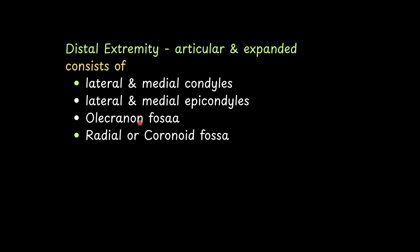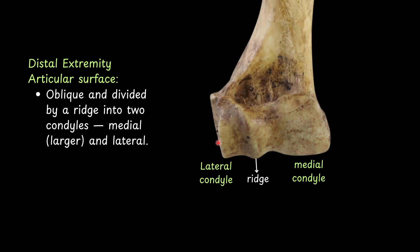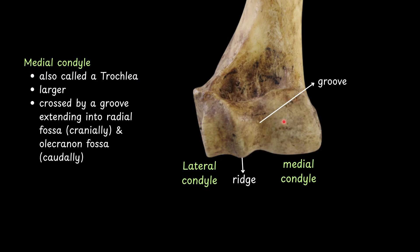The distal extremity is articular and expanded. It consists of lateral and medial condyles, lateral and medial epicondyles, olecranon fossa, and radial or coronoid fossa. The articular surface is oblique and divided by a ridge into two condyles — medial and lateral. The medial condyle, also called the trochlea, is larger. It is crossed by a groove extending into the radial fossa cranially and the olecranon fossa caudally.